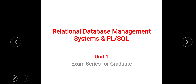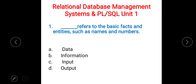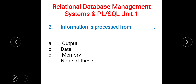First question: dash refers to the basic facts and entities such as names and numbers. Options are: A) data, B) information, C) input, D) output. The right answer is A) data — data refers to the basic facts and entities.